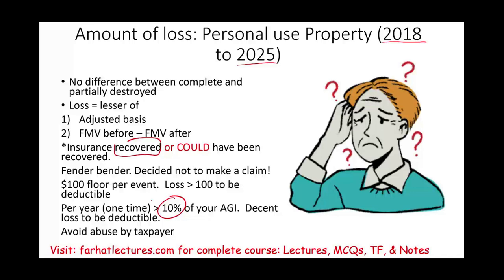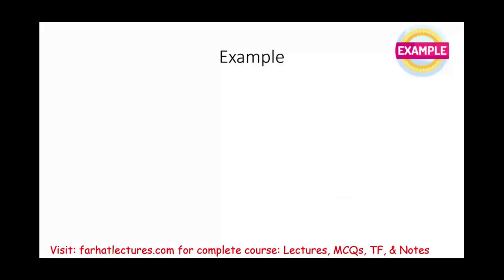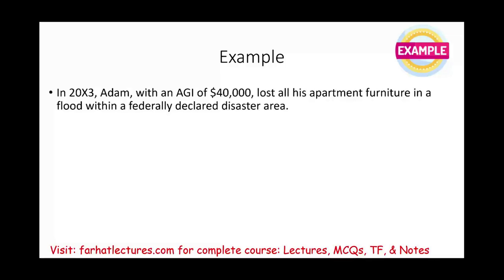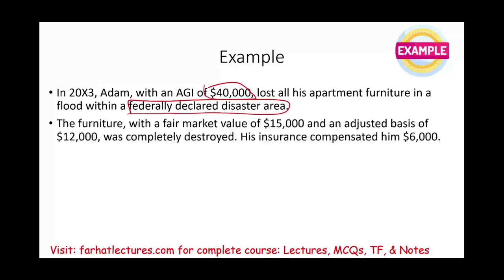Any theft or casualty loss filed on your tax return must be large enough to exceed 10% of your AGI, and the loss itself must be more than $100. In 20X3, Adam — with an AGI of $40,000 — lost all his apartment's furniture in a flood within a federally declared disaster area, so the deduction is allowed. The furniture had a fair market value of $15,000 and an adjusted basis of $12,000. It was completely destroyed. His insurance compensated him for $6,000.